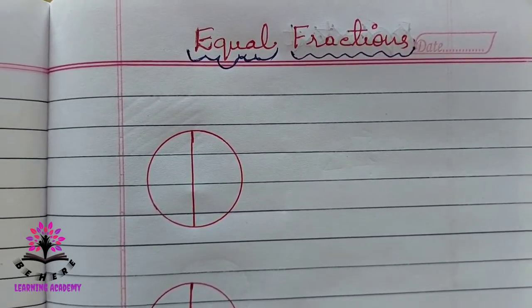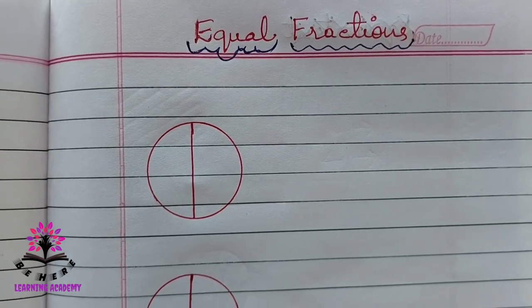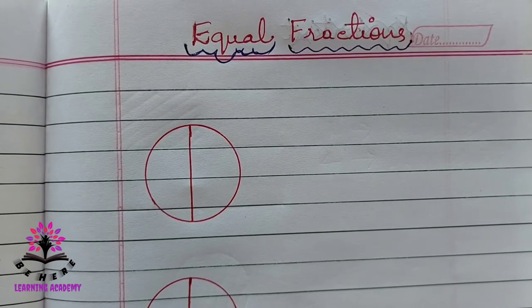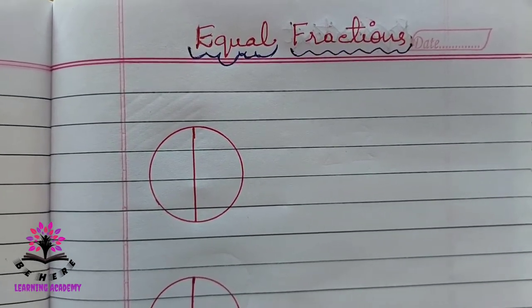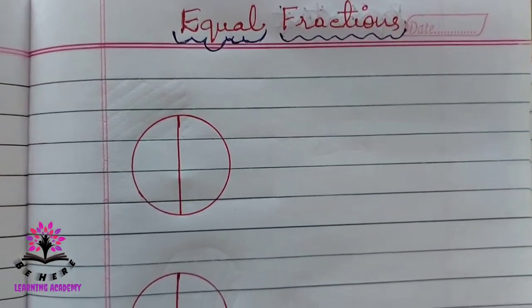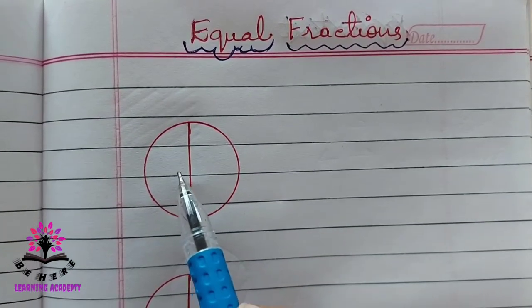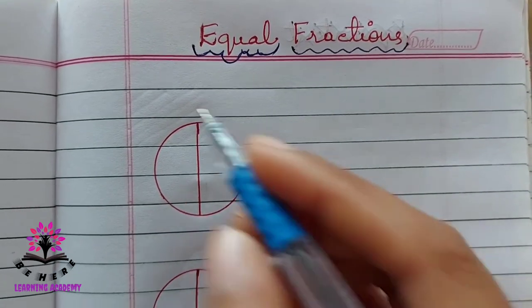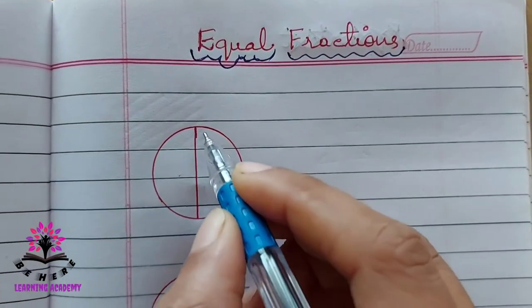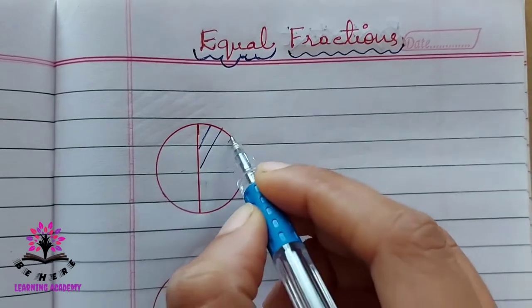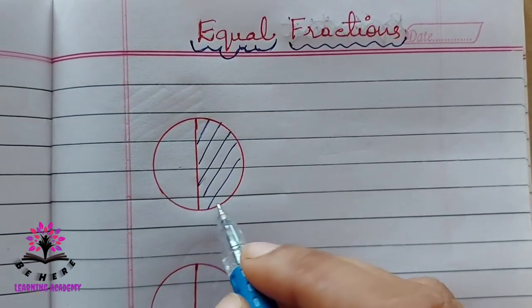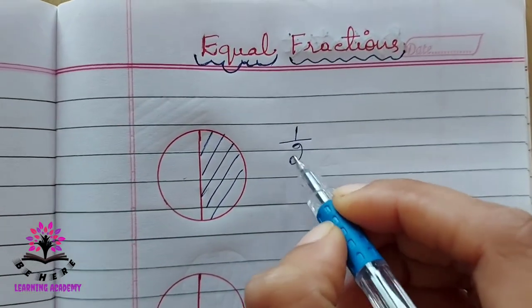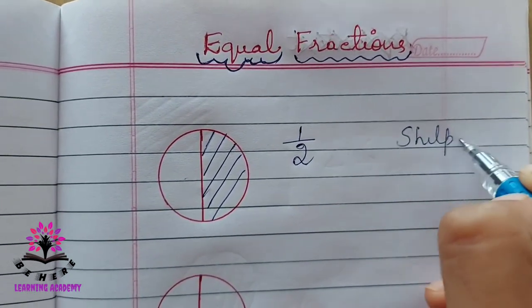Shilpa said, let us have a Dilpasand — one each. Now, Shilpa, out of two equal parts she ate one part. That means she ate one by two — 1/2.